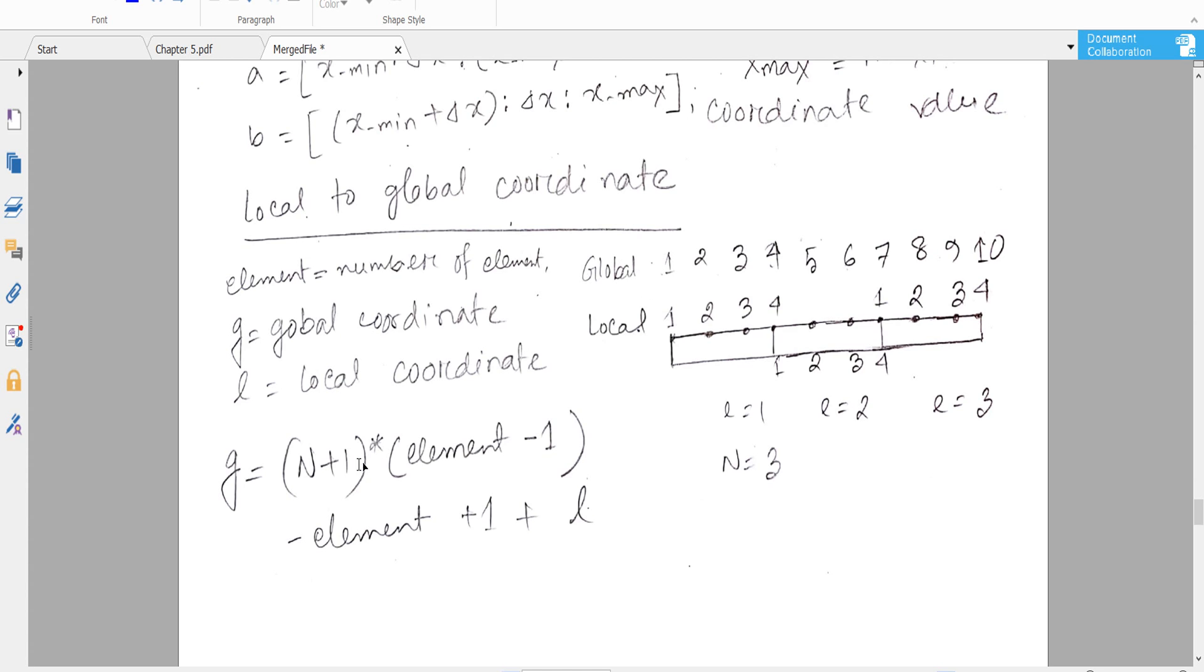So we say that this is G for global, and the formula is like that. And local, that means L. If this is the coordinate number set, let's say 2 plus 1, 3.